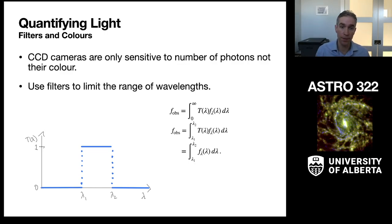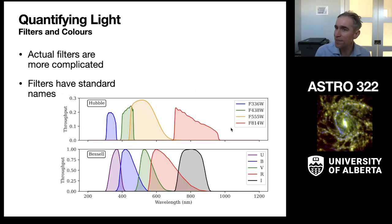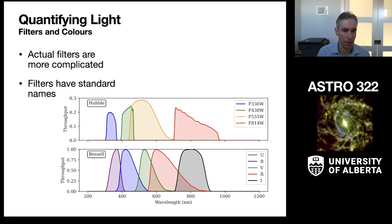Essentially what the filter is doing is making a color-blind detector into a color-sensitive detector so it only detects a certain color. This is an ideal filter, but in reality filters are more complicated. These actual filters have some shape to them — here are some classic filters used in optical astronomy. On the horizontal axis we see wavelength of light received by a CCD camera, and on the vertical axis are the throughputs.